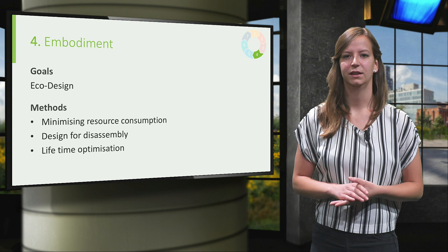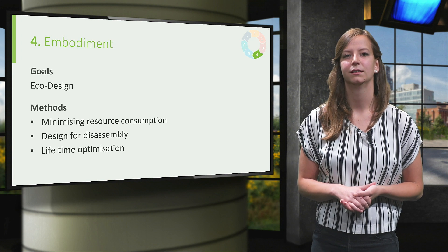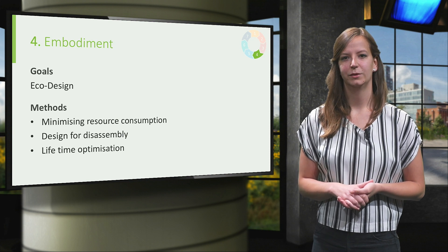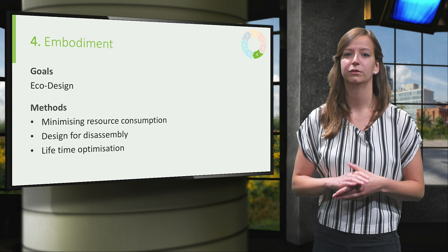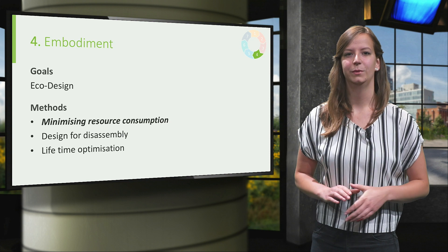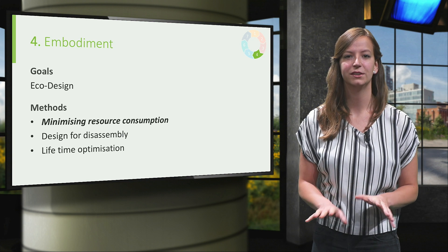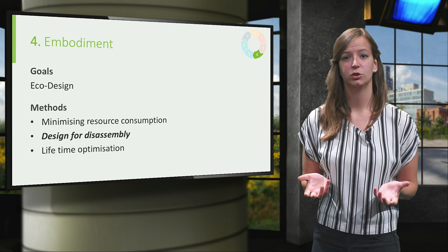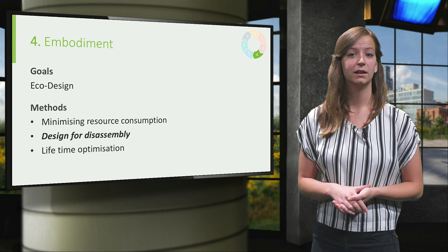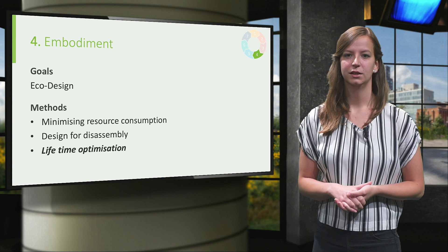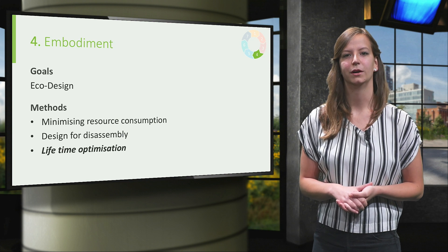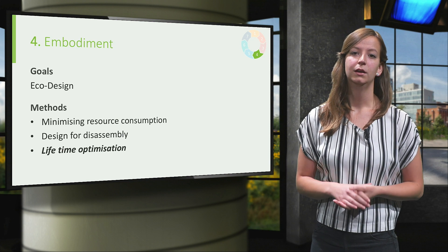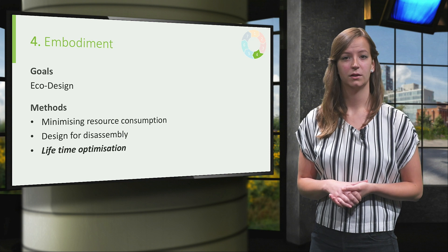In the embodiment phase, the selected concept will be improved and the final design will be created. The goal during this phase is to design in a sustainable manner. The Sustainable Mechanical Engineering Guide contains a selection of the many design-for tools available to help you achieve this. The first one is minimizing resource consumption, where you look into using the least amount of materials with lower impact. The second one is design for disassembly, where you design in such a way that the product is easy to disassemble. And the last tool is the lifetime optimization method, which provides several ways in which a product can be optimized: from designing for an appropriate lifespan, to designing for upgrading, maintenance or reuse. Use the guide to find more information on their benefits and on how to use these methods.